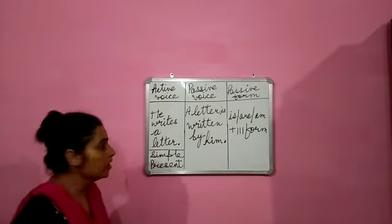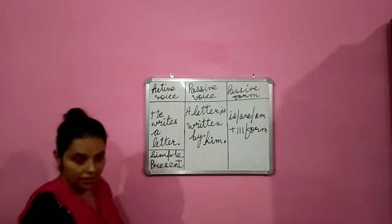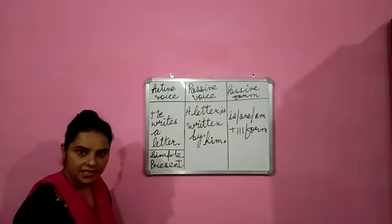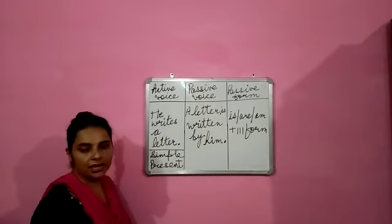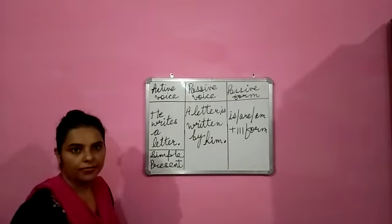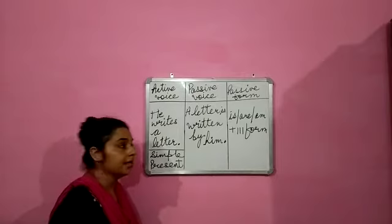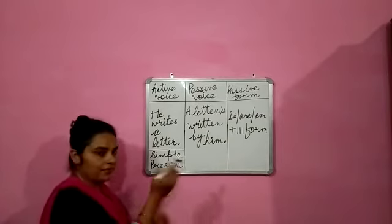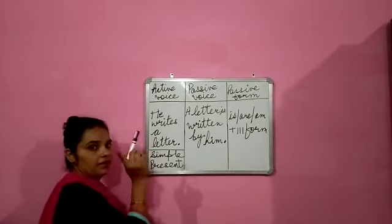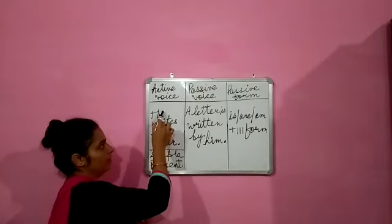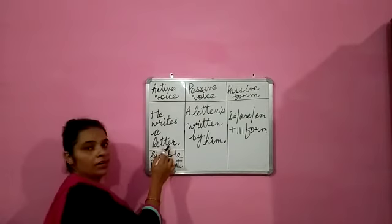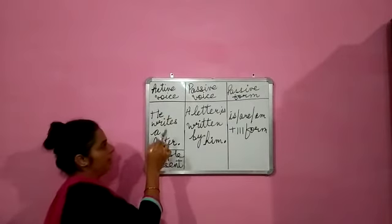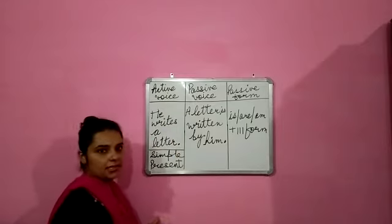Simple present tense. See, I have written a sentence: 'He writes a letter.' It's simple present tense — he writes a letter, chitthi likhta hai. When we convert it into passive, remember the rule: the object will come here, the subject will go here, and the change will be in the verb.